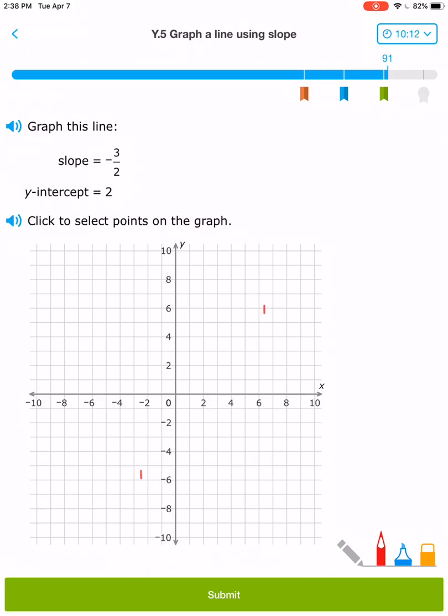It says to graph the line with a slope of -3/2 and a y-intercept of 2. Remember, if it's a y-intercept, then you have 0 for your x and 2 for your y. So I'm going to plot (0, 2) first.